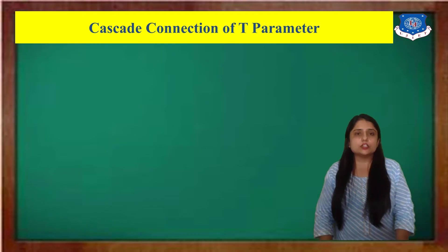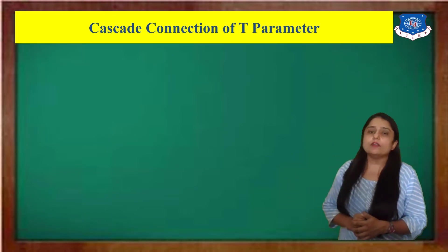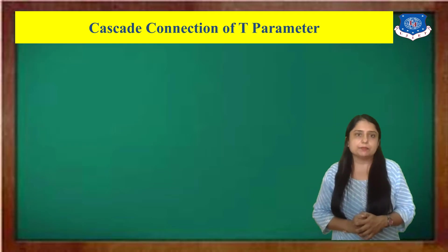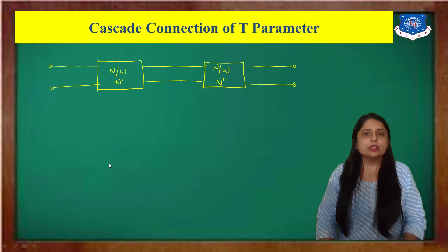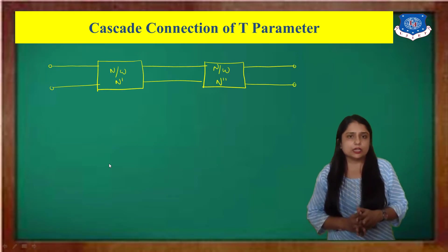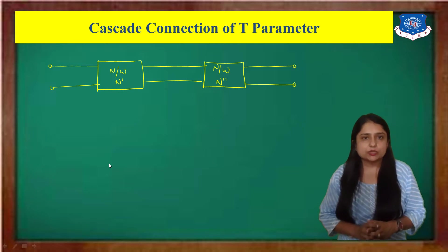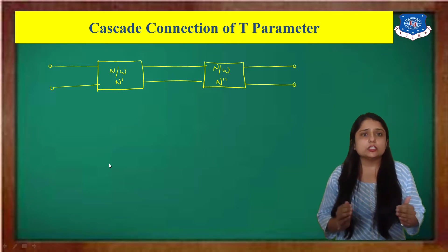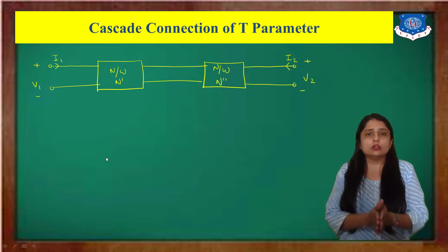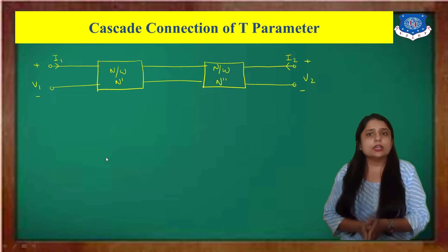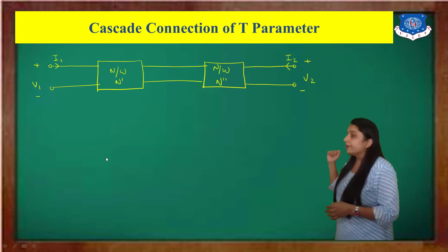Our first topic is the Cascade Connection of T-Parameter, also called the Transmission Parameter. For that we consider a diagram with two networks: one network is N-dash and another is N-double-dash, connected in a series connection. The overall input voltage is V1, input current is I1, output voltage is V2, and output current is I2.